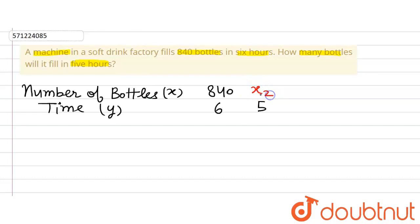Let's call this unknown quantity x2. Now it can be observed that the machine will fill more number of bottles when it will operate for a long period of time.